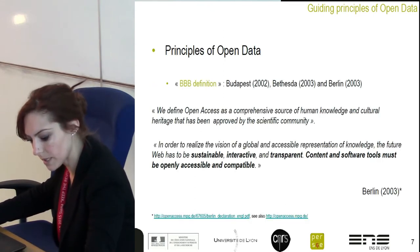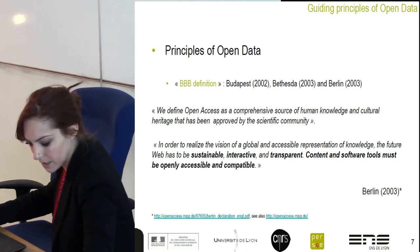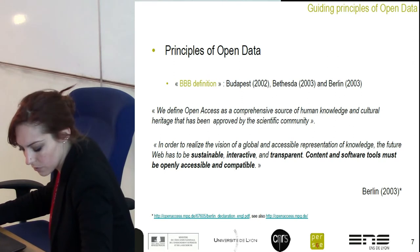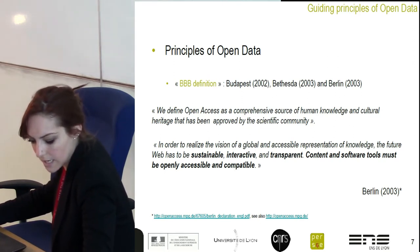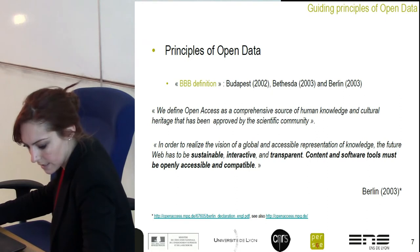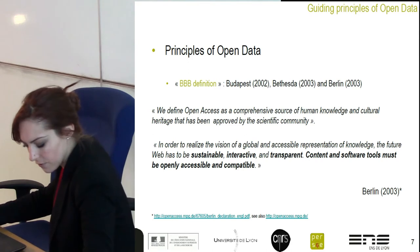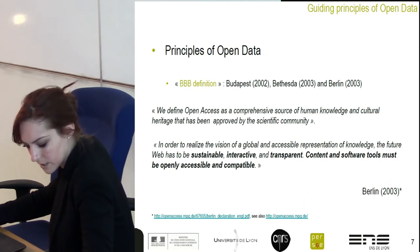So, what are the main principles of open data? The best answer is given by the BBB definition. This acronym corresponds to three reflections known as Budapest, Bethesda and Berlin. The Berlin Declaration of Open Access to Knowledge in the Sciences and Humanities, redacted on 22 October 2003, defined open access as a comprehensive source of human knowledge and cultural heritage that has been approved by the scientific community.